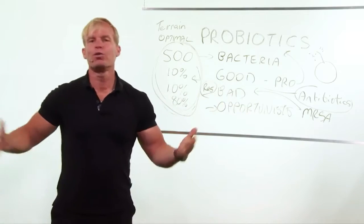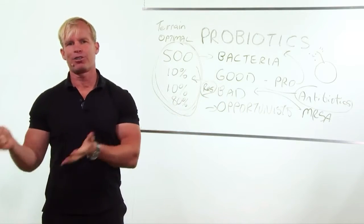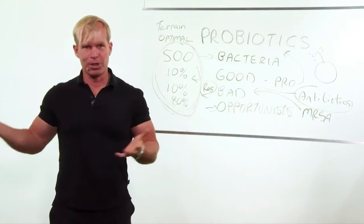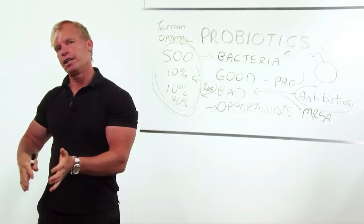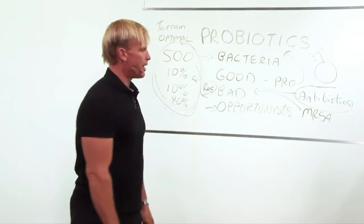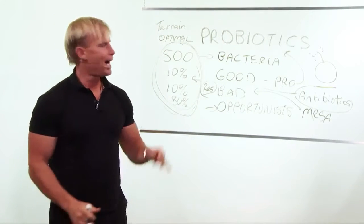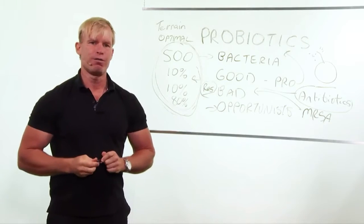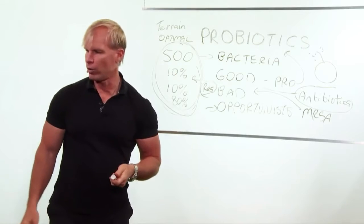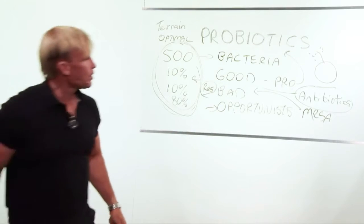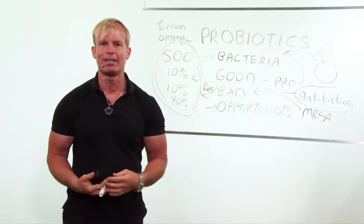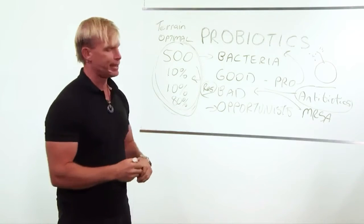Now of course, the rumor has it that on his deathbed Pasteur said, you know what, Beauchamp is right. It's the terrain. I can't confirm or deny that. But what's interesting is here we are years and years later, and guess what? We're finding that we just can't wipe those guys out. So what do we do? How do we take control of this environment? How do we get in here and take control of it?